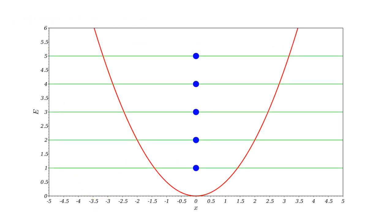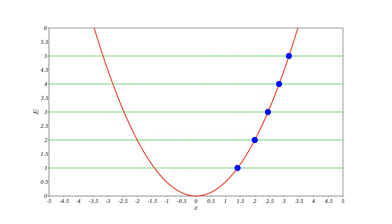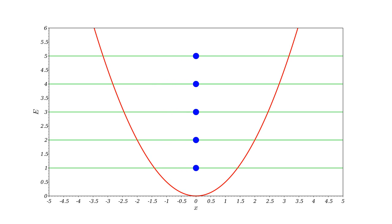Let's examine motion in the quadratic potential. The red curve shows potential energy versus x. Five blue dots and associated horizontal green lines correspond to relative total energies of one, two, three, four, and five. For any value of x, the red curve is potential energy, and the distance from the red curve to a green line is kinetic energy. Higher energies correspond to larger oscillation amplitudes, but in all cases the required time for one complete oscillation — and therefore the oscillation frequency — is the same. This is the characteristic behavior of a harmonic oscillator. Also, by the symmetry of the potential function, the average position over one oscillation is always zero.